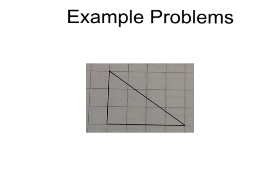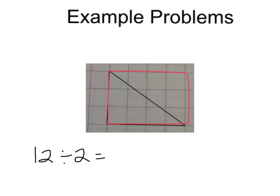Now let's try some example problems. Which method is best to use to figure out the area of this right triangle? If you guessed Strategy 1, Add the Parts, you are correct. Since this triangle is already a right triangle, we can simply draw a box around the entire thing to create a rectangle, count the number of squares inside the rectangle, and divide by two. That will give us our final answer. Here's my box. Counting the squares inside: one, two, three, four, five, six, seven, eight, nine, ten, eleven, twelve. Twelve divided by two equals six. These boxes are one centimeter by one centimeter, so our units are centimeters squared.